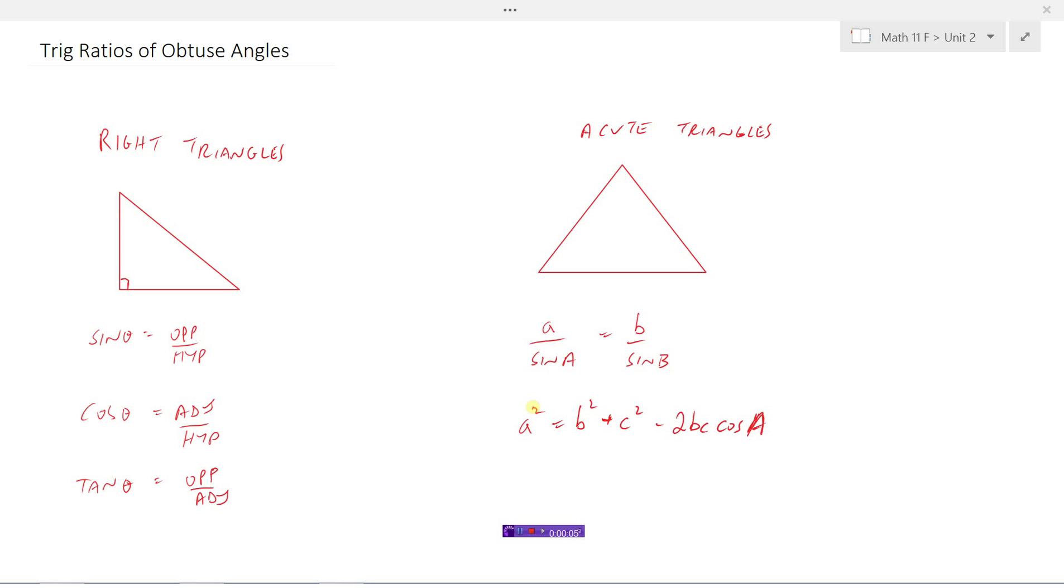So far you've learned how to use trigonometry in right triangles. A right triangle just means that there's a 90 degree angle in the corner. If we have a triangle like this that has a 90 degree angle in it, then we can use our primary trig ratios.